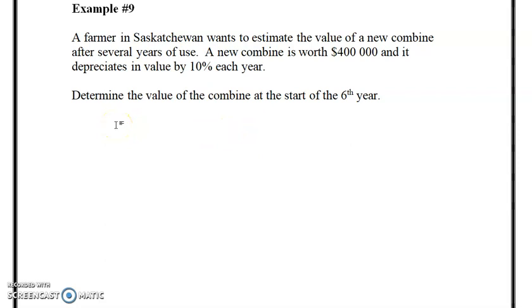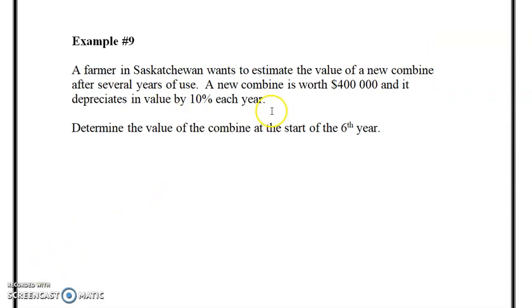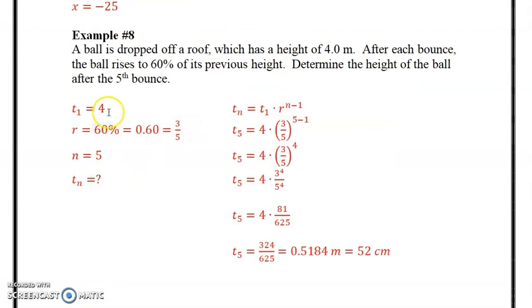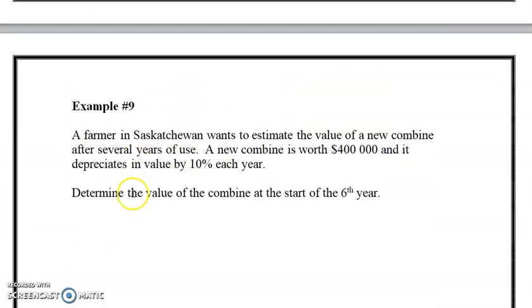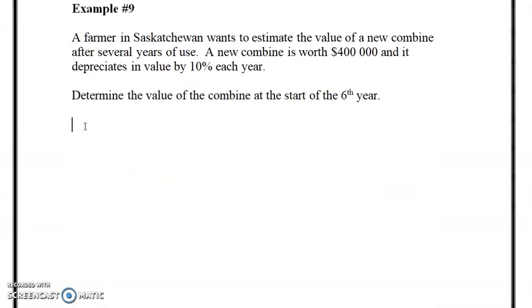So let's look at the question. We'll write down the information. I treat it just like a physics question. I put all the information on the left-hand margin, especially when you're doing a word problem. I'm going to go grab my terms. So the first thing we're going to do is the first term. The first term is going to be $400,000. That is the value of the combine.